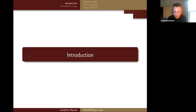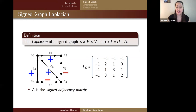First, I would like to go over the Laplacian of a signed graph, which is a V by V matrix defined by the degree matrix minus the adjacency matrix, where we use the signed adjacency matrix. We use degree to represent the number of edges incident to a vertex. A positive adjacency shows up as minus one in our Laplacian, and a negative adjacency shows up as a positive one, since we're subtracting the signed adjacency matrix.